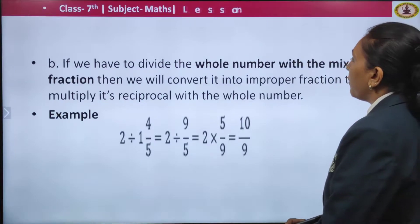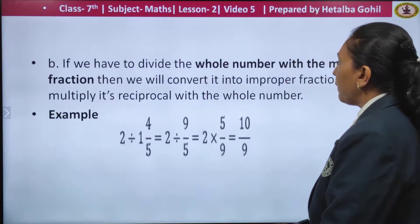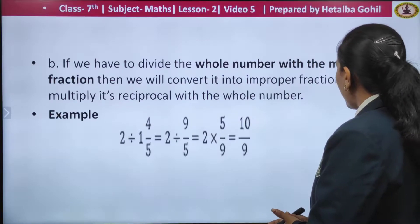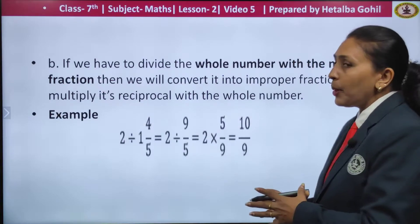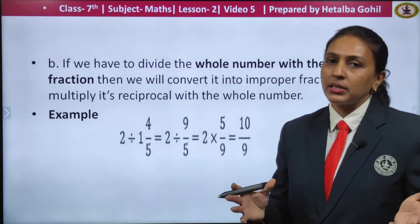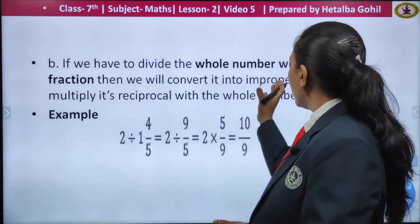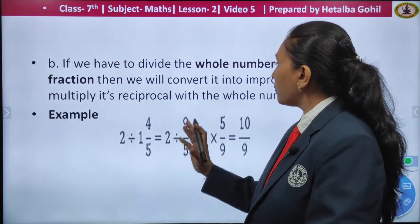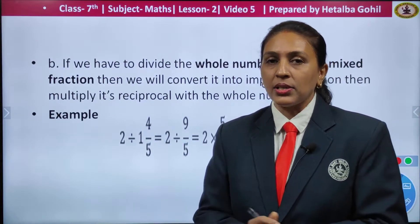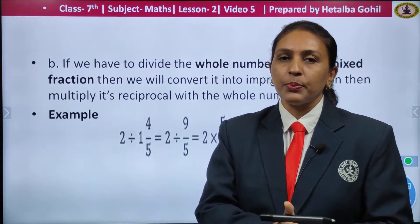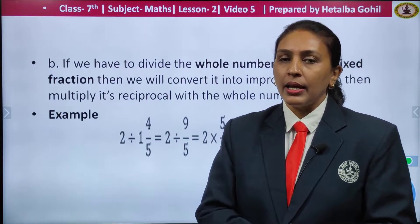If we have to divide a whole number with the mixed fraction, then we will convert it into improper fraction, then multiply its reciprocal with the whole number. The process remains the same — only change here is to convert the mixed fraction into the improper fraction, then after changing the sign use the reciprocal of the next number and multiply the numbers.